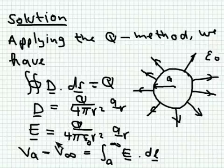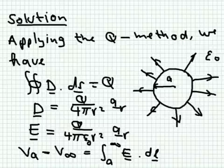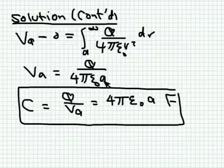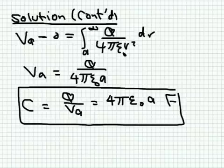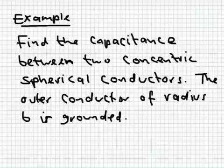From D we get E equals D divided by epsilon_0, since the medium outside the conductor is air. The voltage difference from the surface of the conductor to infinity is the integral from a to infinity of E dot dl, with voltage at infinity equal to zero. Integrating 1 over r squared gives minus 1 over r; substituting the limits gives V equals Q over 4 pi epsilon_0 a. Dividing Q by V, the capacitance is 4 pi epsilon_0 a farads.